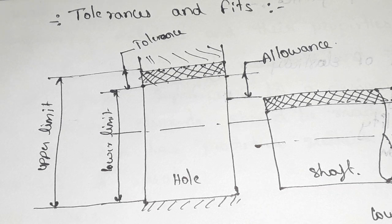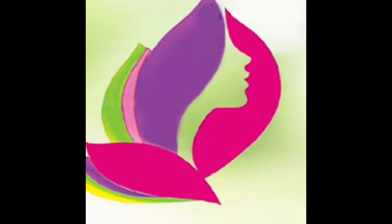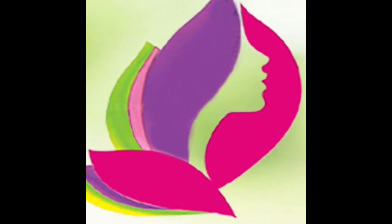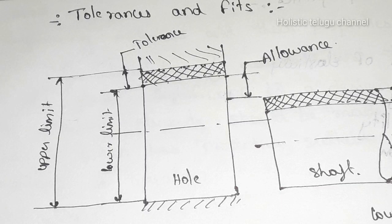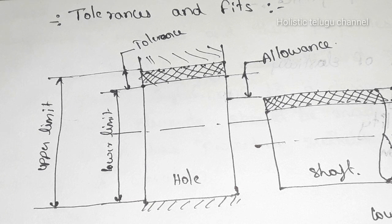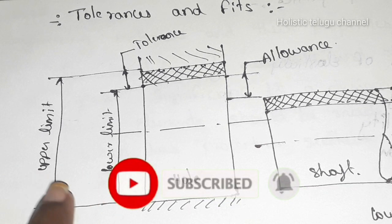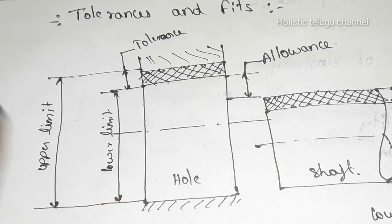We will talk about tolerances and fits. The difference between the upper limit and the lower limit is called tolerances. Tolerances equals upper limit minus lower limit. So that is tolerances.